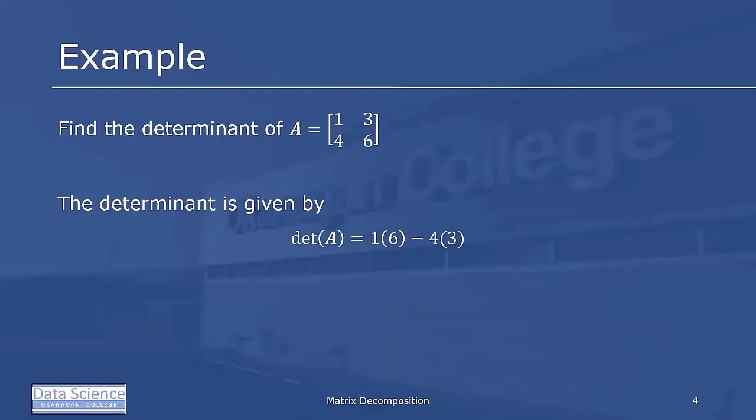As a quick example, we'll find the determinant of the matrix A = [[1,3],[4,6]]. The determinant is 1×6 - 4×3, which equals -6.